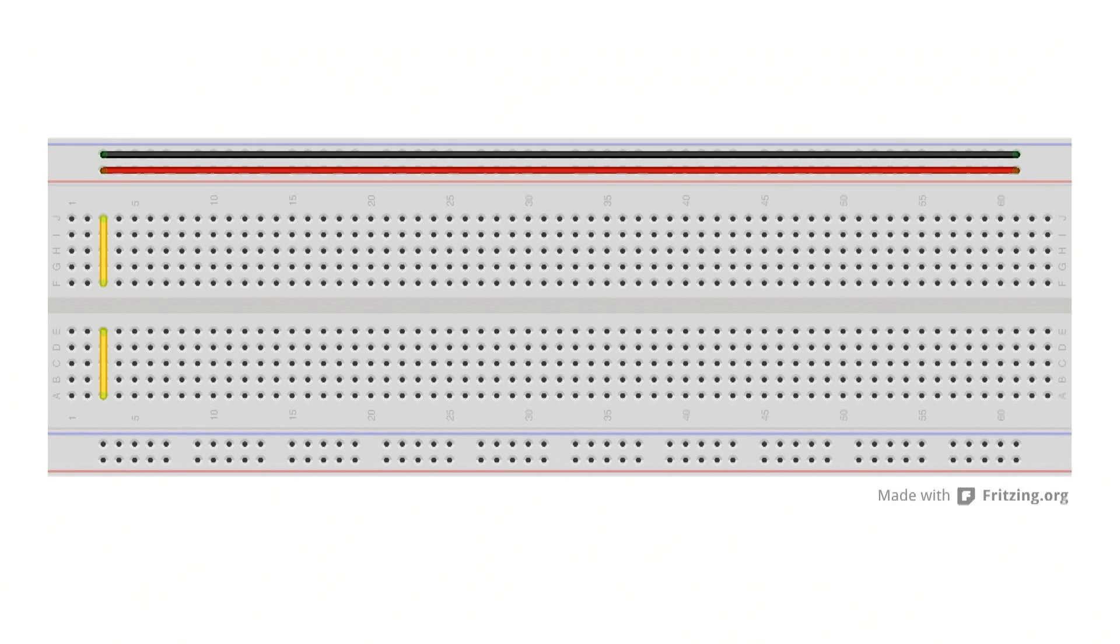In the center there are short rows connected together with a gap in the center. In the short rows in the center of the board you can connect a wire to one hole, for example, and one leg of a resistor to another and they are now connected together as part of a circuit.